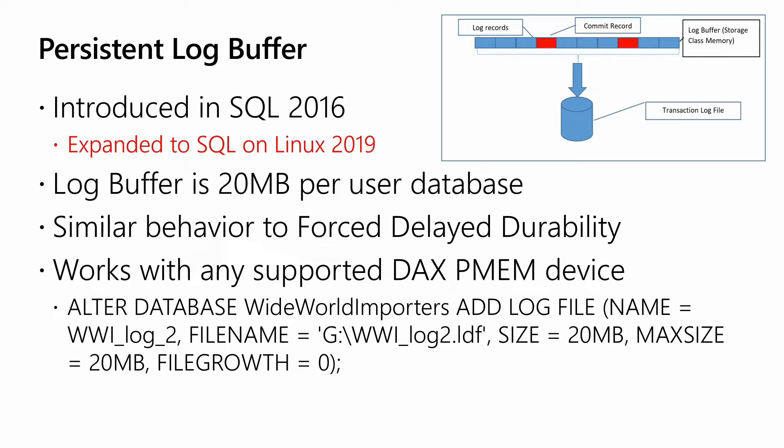The behavior you get is very similar to forcing delayed durability, where you're not waiting for that log flush to happen to disk, but without any of the risks you take with forced delayed durability around data loss. For those not familiar, delayed durability is essentially an asynchronous commit mechanism in SQL Server. In 'allowed' mode, normal commits happen as you expect and you wait for the flush. In 'forced' mode, all commits behave asynchronously.